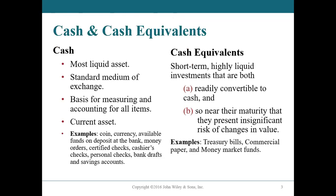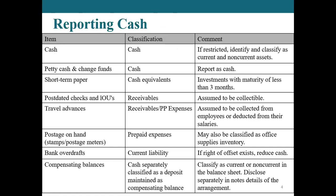Cash and cash equivalents — cash being our most liquid assets includes things like coins, currency, available funds at the bank, money orders, certified checks, cashier's checks, personal checks, bank drafts, and savings accounts. Cash equivalents are short-term investments that are easily converted to cash or very near their maturity where there is no risk of change in value. Examples include treasury bills, commercial paper, and money market funds.